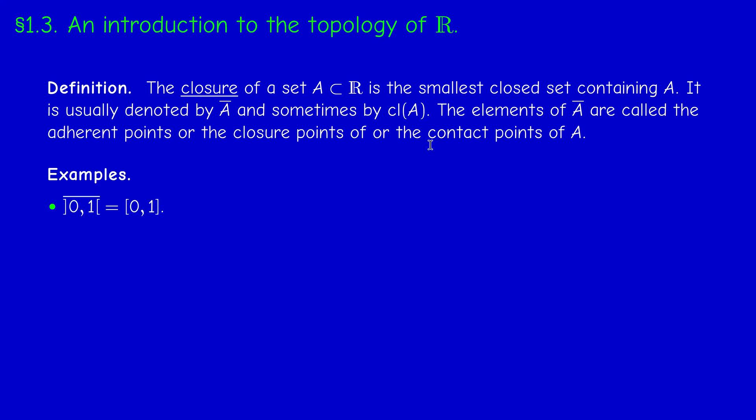For example, what is the closure of the open interval (0,1)? I hope that many of you will guess that it's the closed interval [0,1]. Why? How do you prove that? First of all, [0,1] closed is a closed set containing (0,1). We know that. We know that this is closed according to our definition because its complement is open.